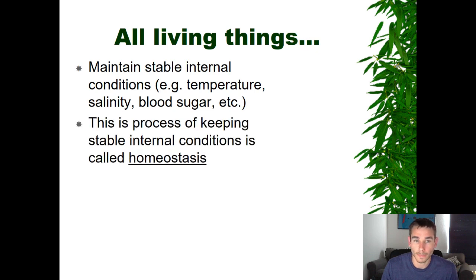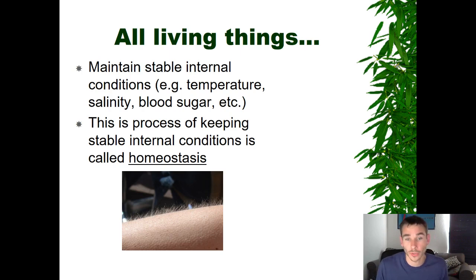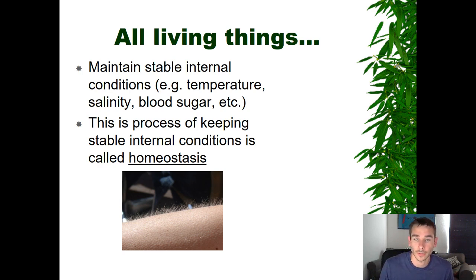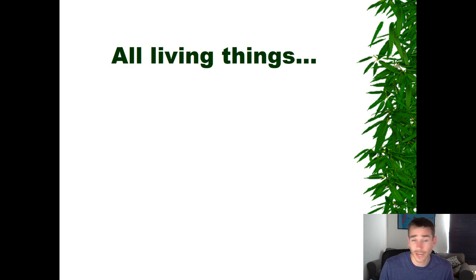The seventh characteristic of living things is the ability to maintain stable internal conditions. The word for this is homeostasis. Everything that's alive must be able to maintain homeostasis — essentially keeping the inside conditions of their body stable. For humans, that means maintaining our temperature, blood pH, and similar things. Goosebumps are an example of this response to colder conditions or fright. Sweating is another example — your body cools itself down in response to heat in the environment.